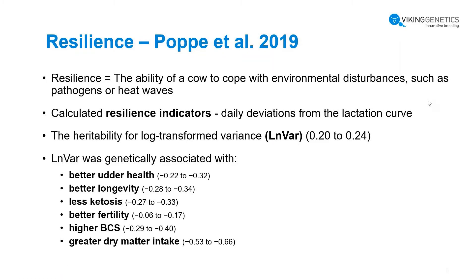We looked into the dairy cattle world and found a study with a little more genetic background from Poppe 2019. Her definition of resilience was the ability of a cow to cope with environmental disturbances, such as pathogens and heatwaves. She calculated some resilience indicators from the daily deviation from the lactation curve. The best indicator she found was LN-VAR, with a heritability of 0.20 to 0.24. She also found that LN-VAR was genetically associated with better health, better longevity, less ketosis, higher fertility, higher body condition score, and greater dry matter intake.